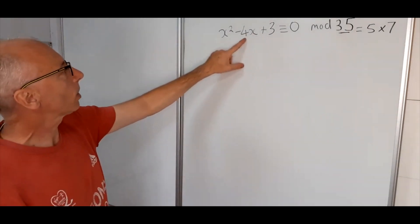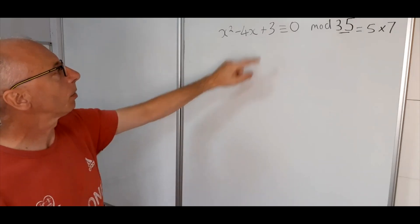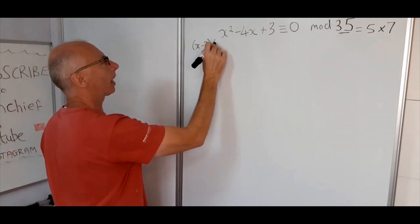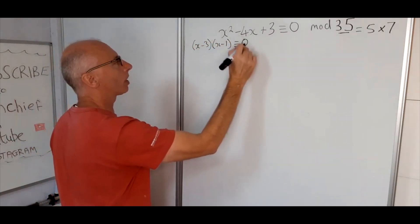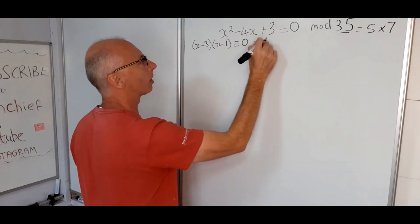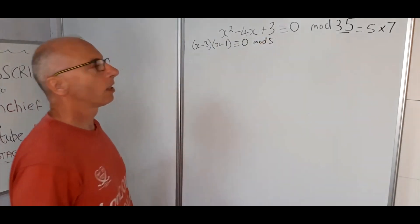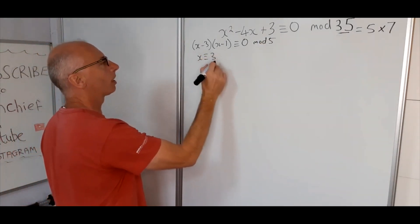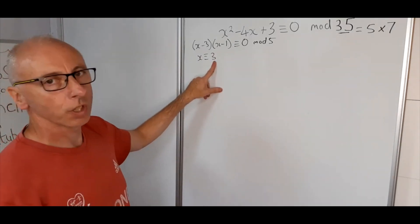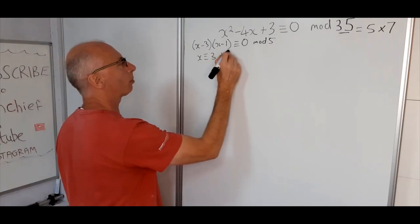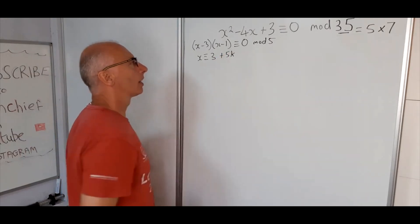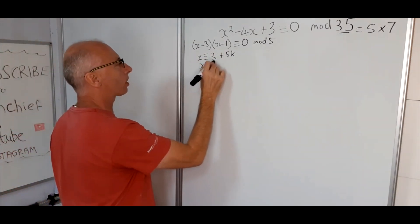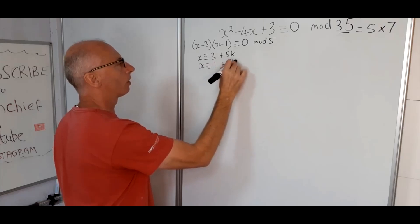So first of all, x squared minus 4x plus 3, we can see that that can be factored. So we get x minus 3, x minus 1 is congruent to 0. So let's do modulo 5 first. Therefore we get x is congruent to 3 plus 5k, and then with this x minus 1 we also know that x is congruent to 1 plus 5k.